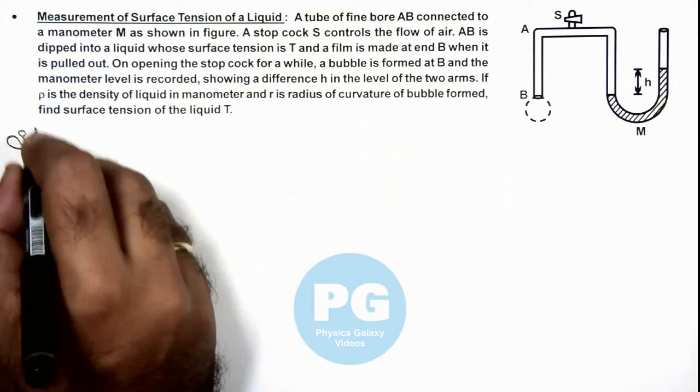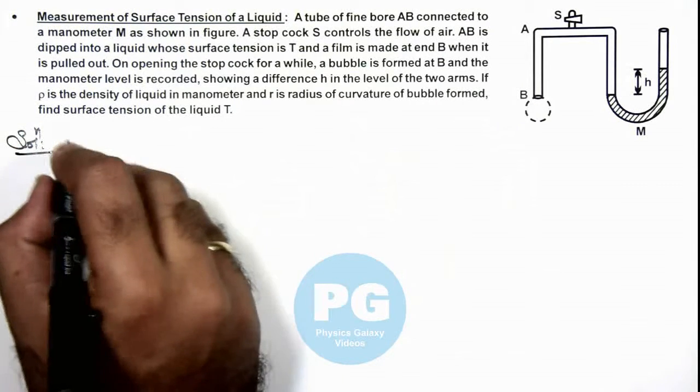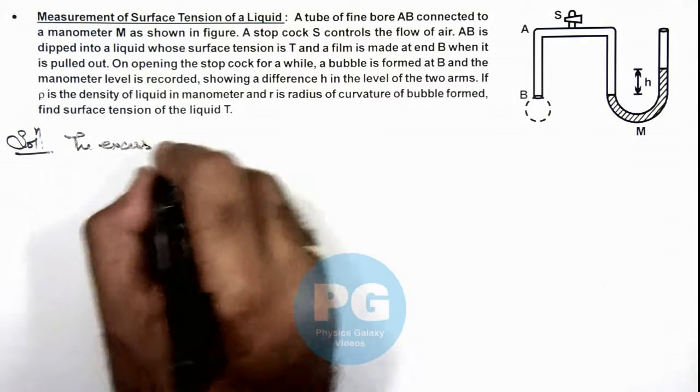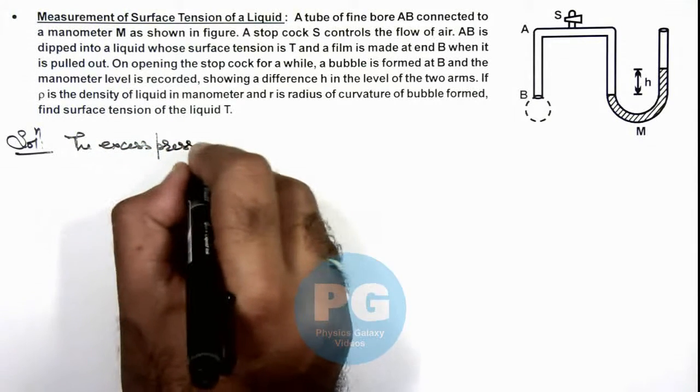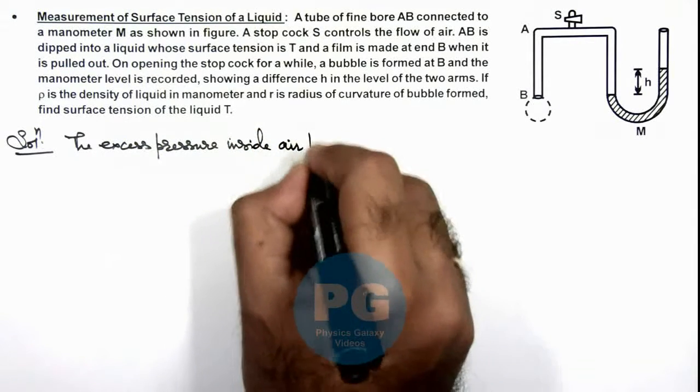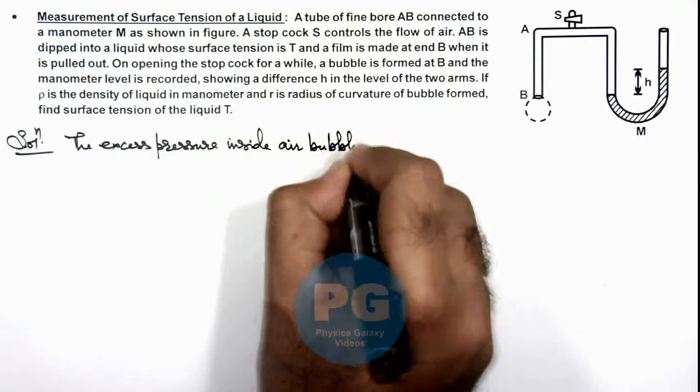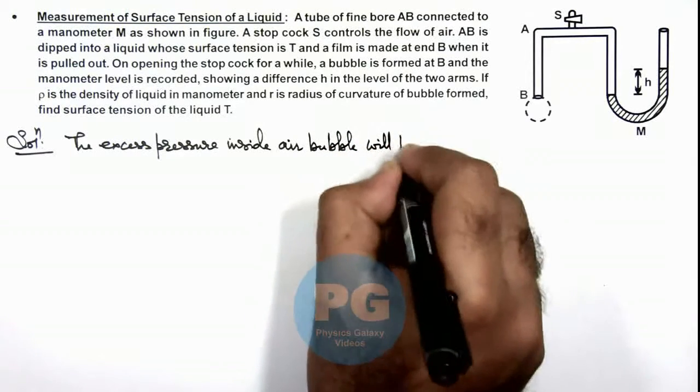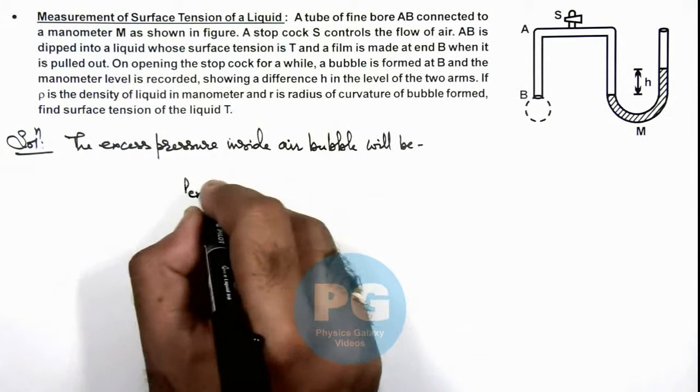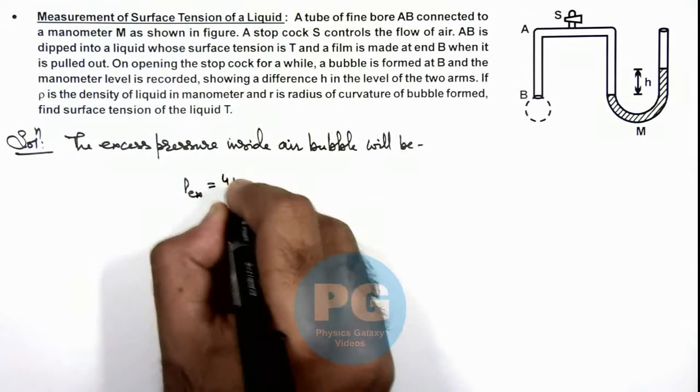The excess pressure inside air bubble will be, we can write excess pressure inside the air bubble as 4T/r, if T is the surface tension of liquid.